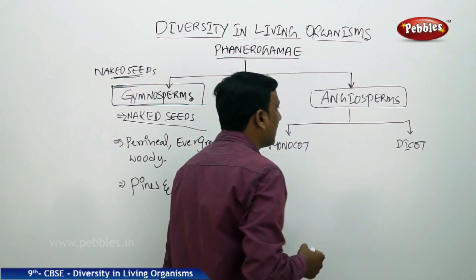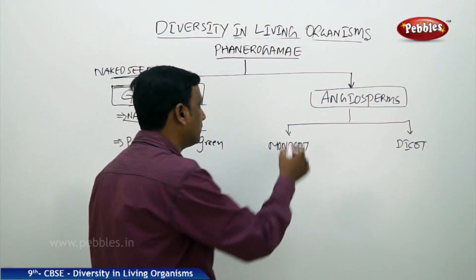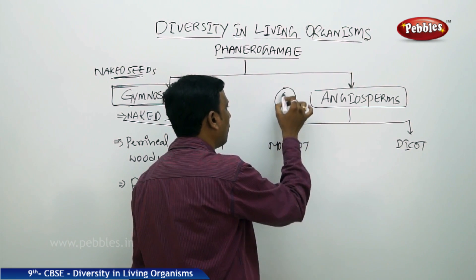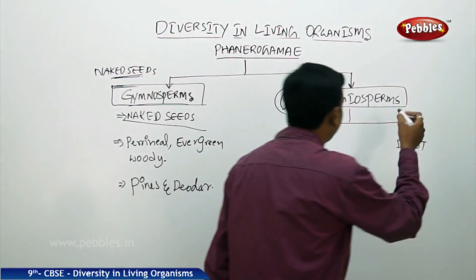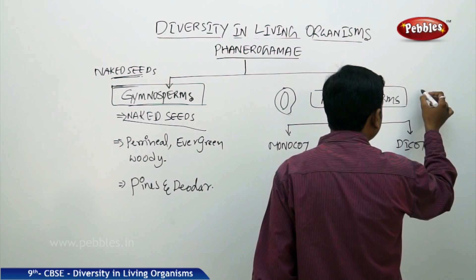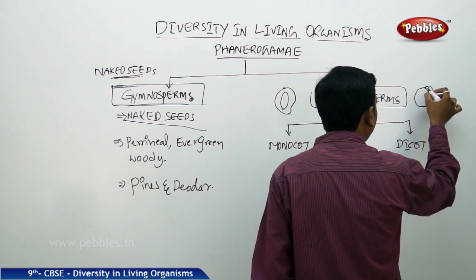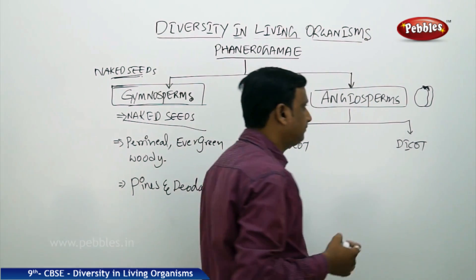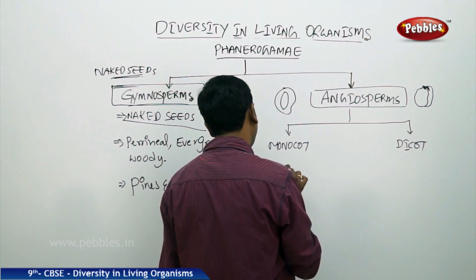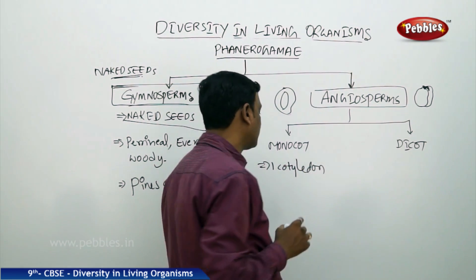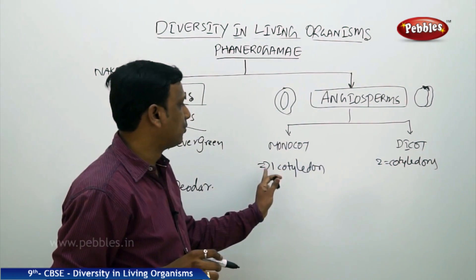Then what are Angiosperms? 'Angio' means closed — the seeds are enclosed in a fruit. For example, a mango consists of one seed inside it — the seed is present inside and is protected. Inside the seed there are cotyledons. If you open a bean seed, you will find two thick leaf-like structures and a baby plant, the embryo. Certain plants have seeds with one cotyledon — that is monocot — and if the seed contains two cotyledons, that is dicot. So Angiosperms are divided into monocots and dicots.